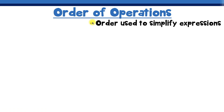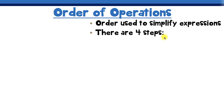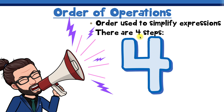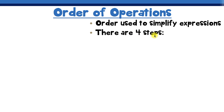In this lesson we're talking about the order of operations. The order of operations tells you the order used to simplify expressions. There are four steps — and the reason I'm stressing that is because the order of operations will show you six letters, but even though there are six letters, there are only four steps.